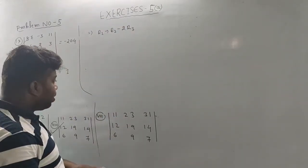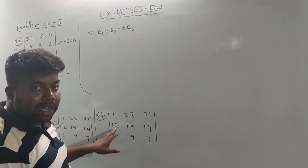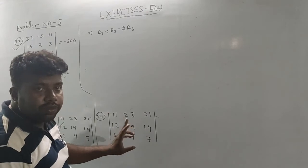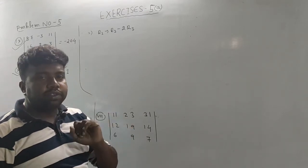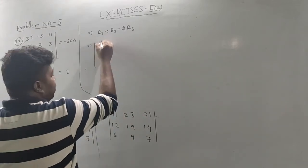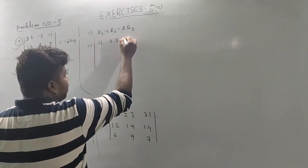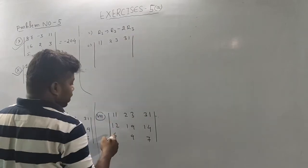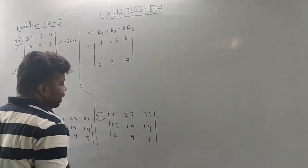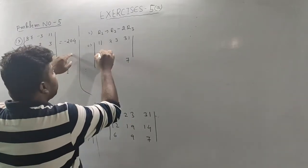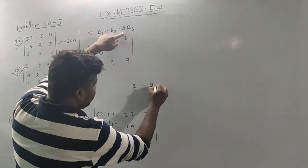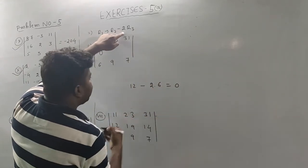So R2: 12 minus 2 into R3, 2 into 6 — R2 becomes 0. So what is it? R1 is 11, 23, 31. R3 is 6, 9, 7. R2 is 0. So R2 tends to R2 minus 2 R3: 12 minus 2 times 6 is 0. 19 minus 2 times 9 is 1. 14 minus 2 times 7 is 0. That is your 1.